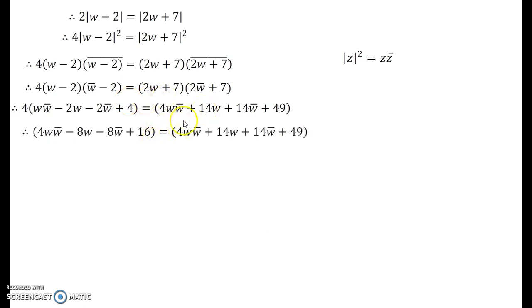When you simplify further, you observe that from both sides 4ww̄ gets cancelled. And when you simplify it further, you obtain these terms. Finally, you obtain -22w - 22w̄ = 49 - 16.